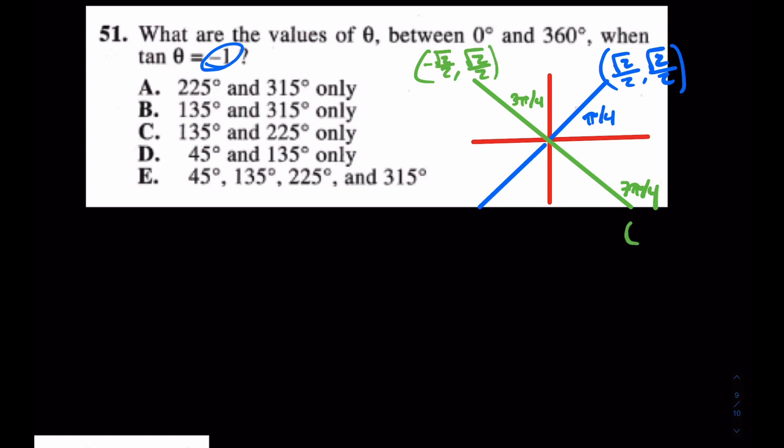And down here, this is 7π/4. What are the coordinates on the unit circle? The coordinates go -√2/2, √2/2. And down here, positive √2/2, -√2/2. At which point, anything divided by itself is 1, but these would give you -1.